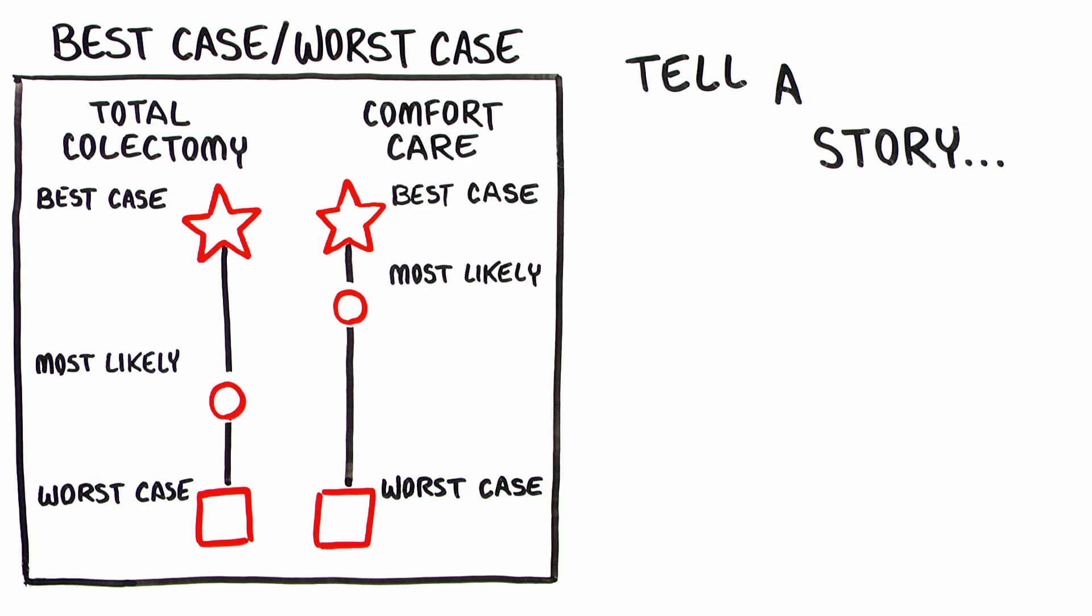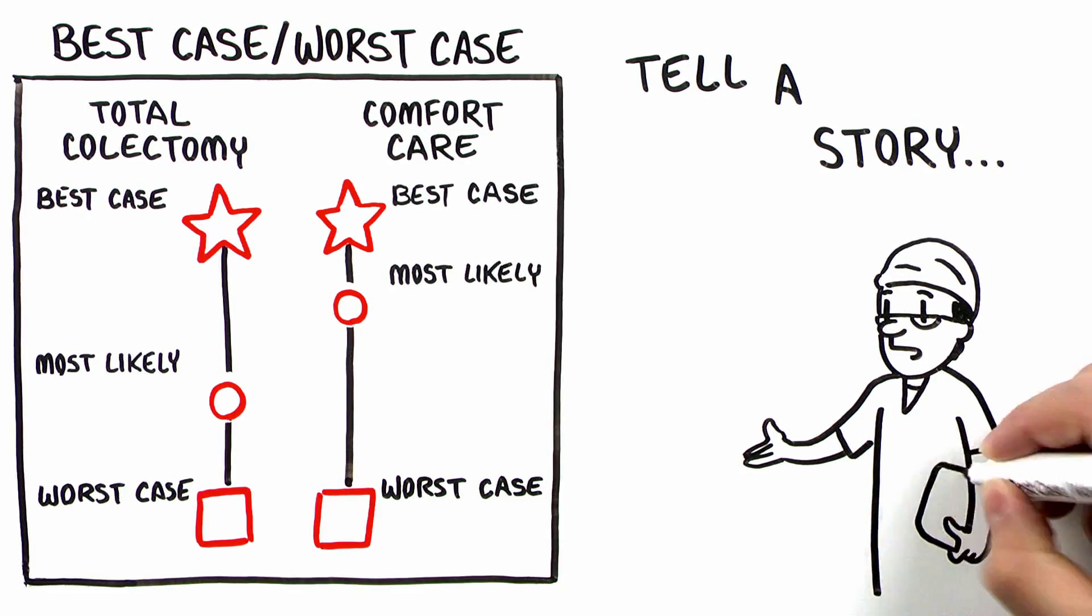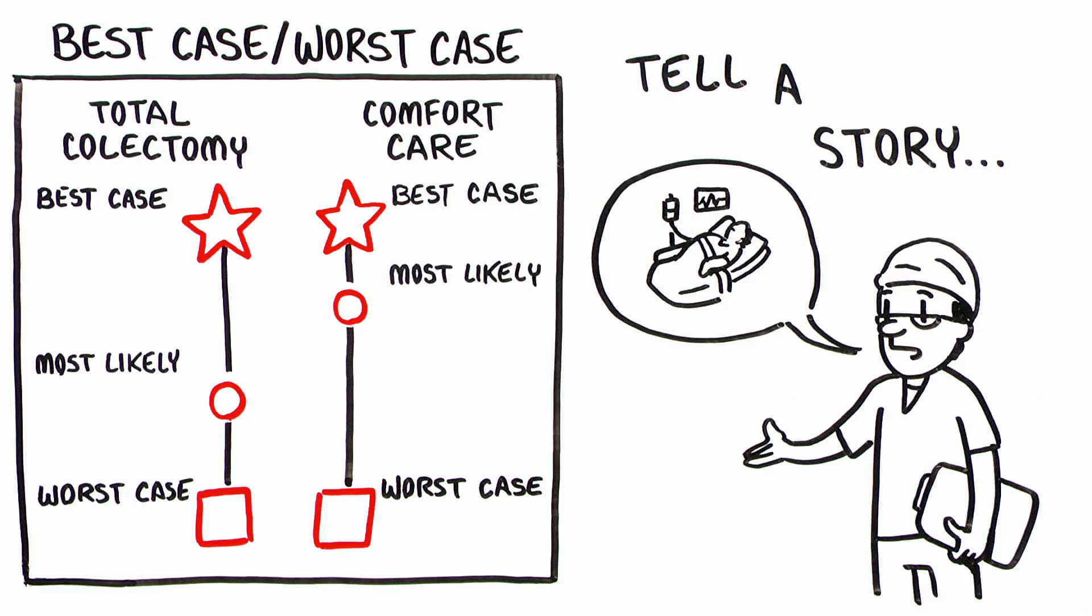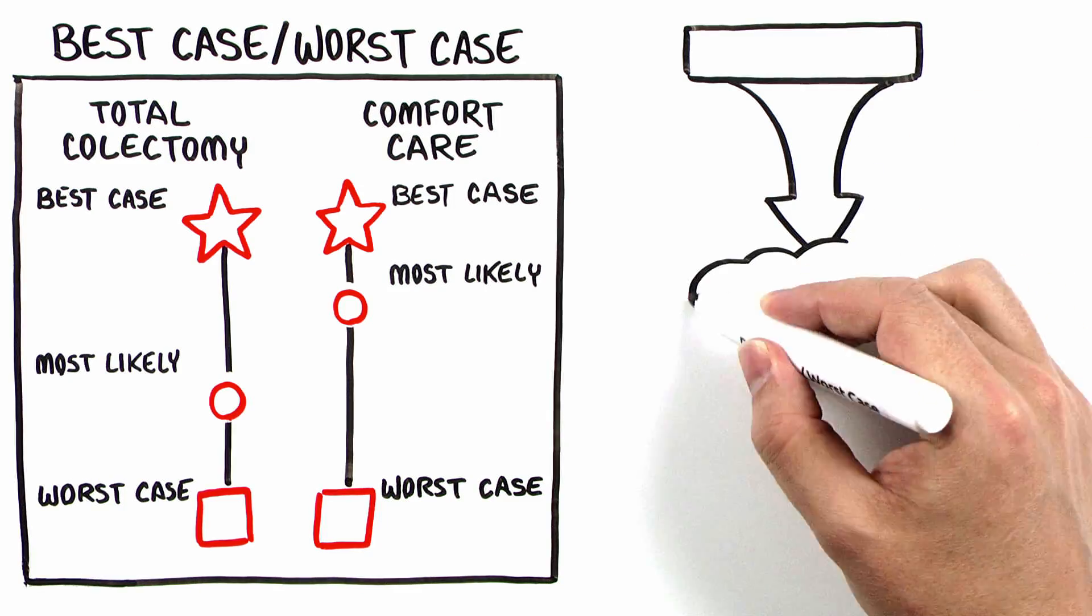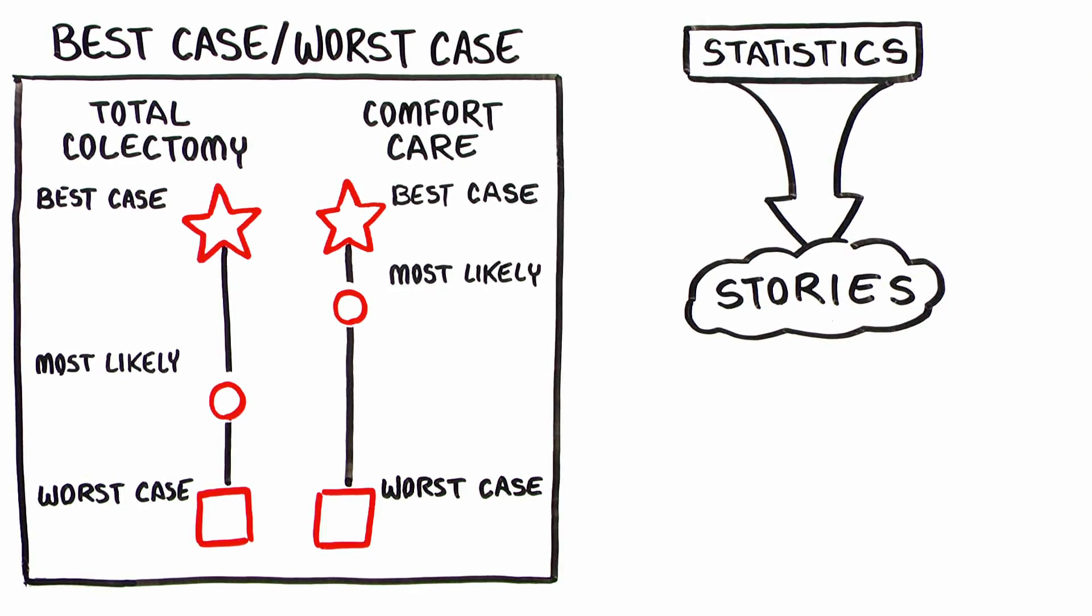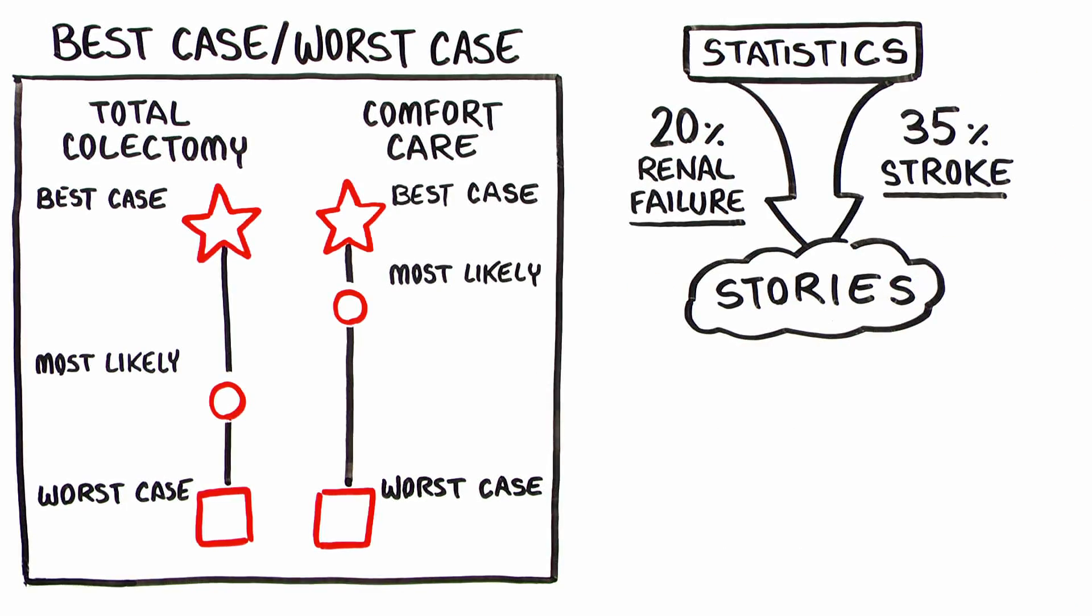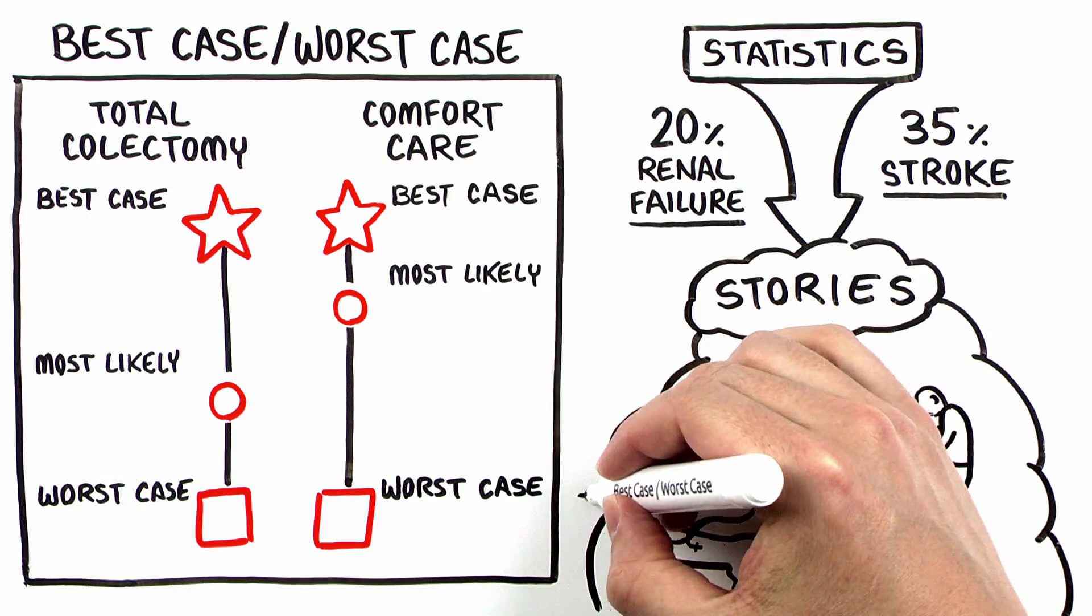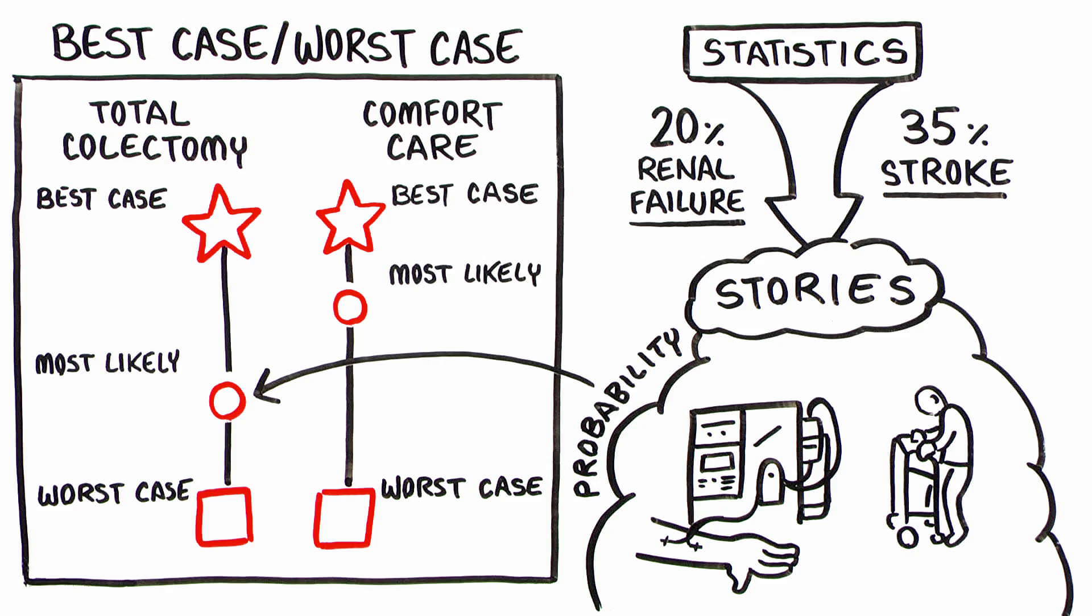Telling a story is key. This helps patients imagine an unfamiliar experience so they can prepare and make decisions based on what is important to them. While surgeons often focus on providing precise risk calculation, these numbers don't help patients envision what it is actually like to have surgery. So, how can you explain the risks and benefits? By translating the statistics you know into stories. Instead of talking about a 20% risk of renal failure and a 35% risk of stroke, tell a story about what a patient's life might actually look like if these complications occurred. You show the probability of these events by where you position the most likely outcome on the line, between best and worst.